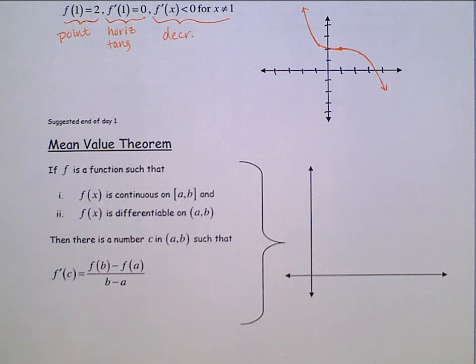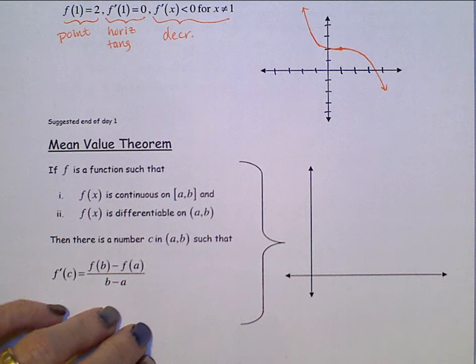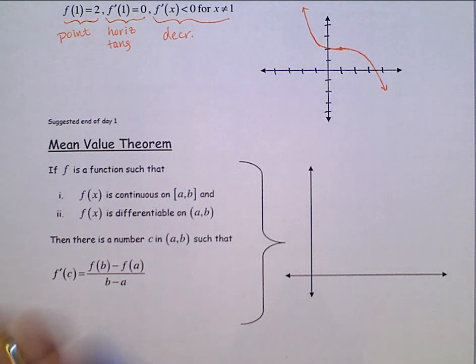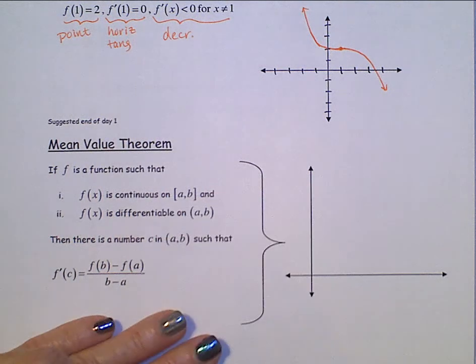f prime of c is equal to f of b minus f of a all over b minus a. Oh, boy. Let's see if we can figure out what some of this stuff means because it's really not that difficult of a concept here.